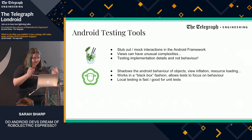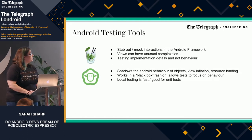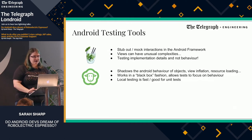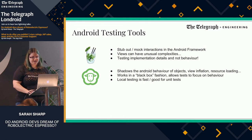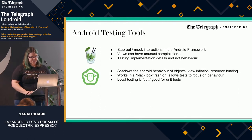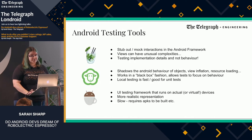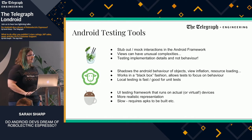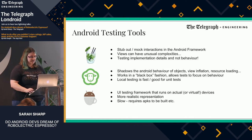Next we have Roboelectric. This shadows the Android behavior of objects, view inflation, and resource loading in a much more practical way than Mockito. It still works in a black box fashion, but allows the tester to focus more on behavior as a result. Local testing is much faster and good for unit-style tests. It's a slightly better tool for simulating Android behavior and handling that behind the scenes without having to do all of it manually yourself.